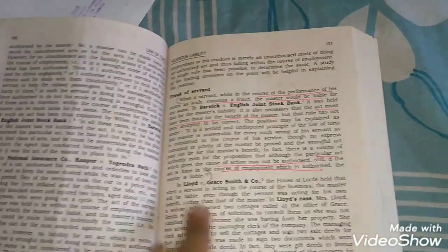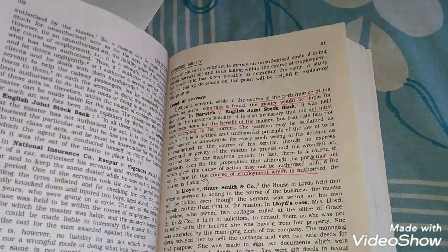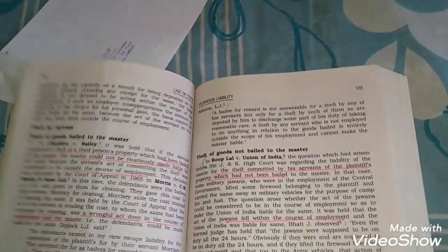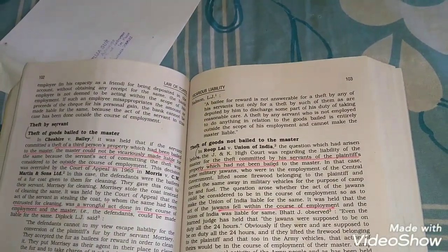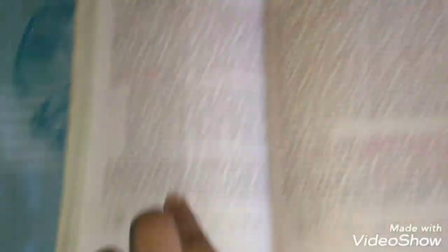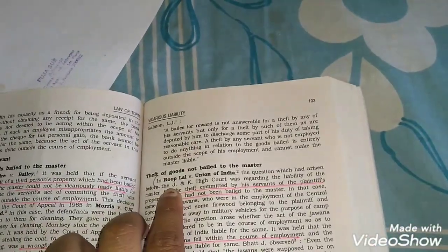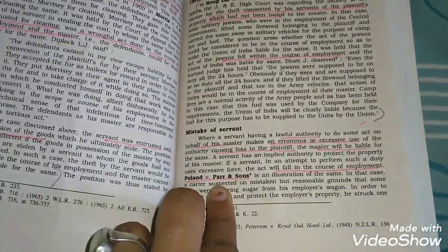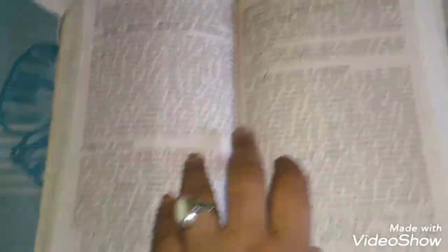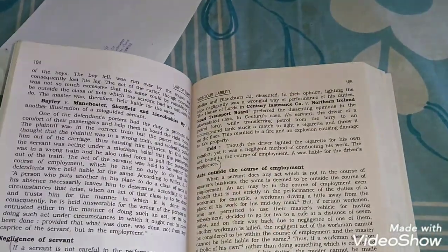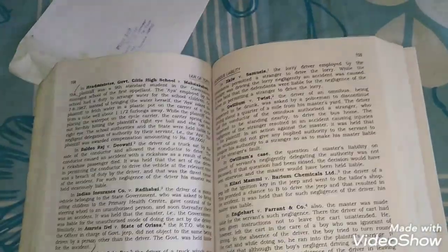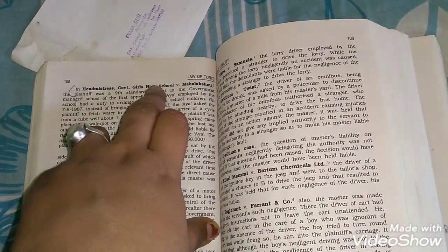When a servant from there to liable. Theft by servant, theft of goods bailed from there to union. Theft from there to for the same. In Roop Lal versus Union of India from there to units by the union. Just read the next paragraph up to this case law known as Poland versus Parnes. If a servant from there to negligence. In State Bank of India from there to for the same. In Head Mistress Government Girls High School versus Mohalakshmi from there to for the accident.